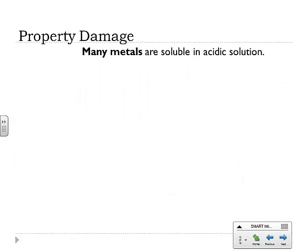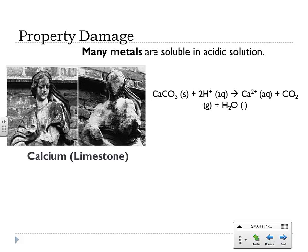First off, property damage. One of the important properties of acids is that they're good at solubilizing metals — dissolving metals. Calcium is a metal; it's in the metal section of the periodic table, and calcium is a major component in limestone. When you take limestone and react it with acid, you can actually dissolve it. You get calcium ions which are aqueous, CO2 gas, and H2O liquid. It dissolves away limestone so that your pretty statue doesn't have a face after a number of years.